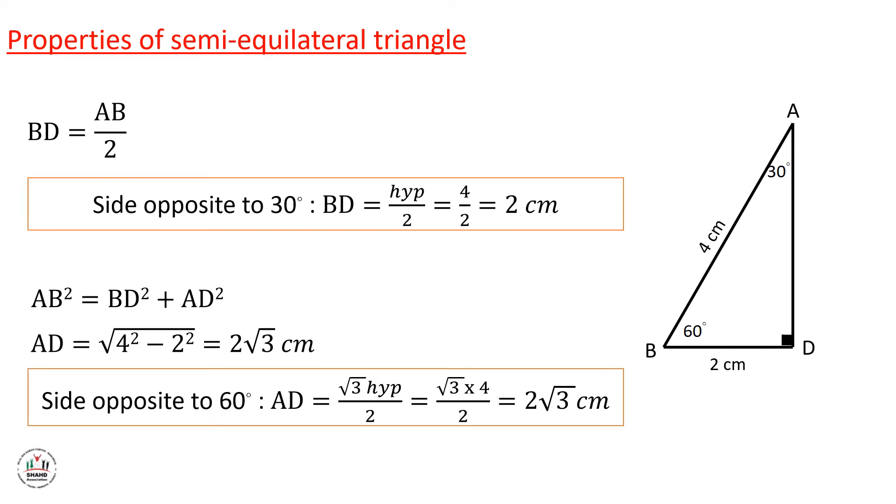Another property: side opposite to 60 degrees, AD, will be equal to hypotenuse times radical 3 over 2. If we substitute the values, hypotenuse is equal to 4 centimeters. So radical 3 times 4 over 2, 4 will go with 2 and the answer will be equal to 2 radical 3 centimeters.